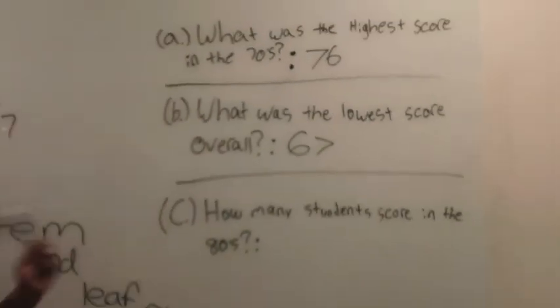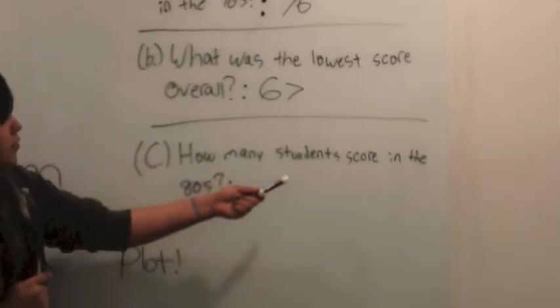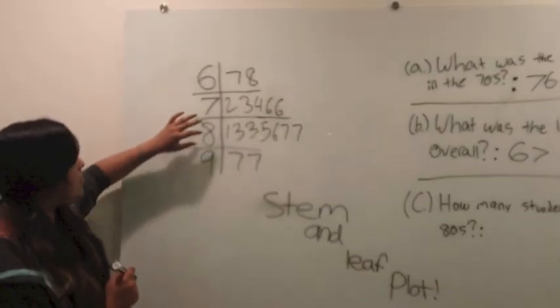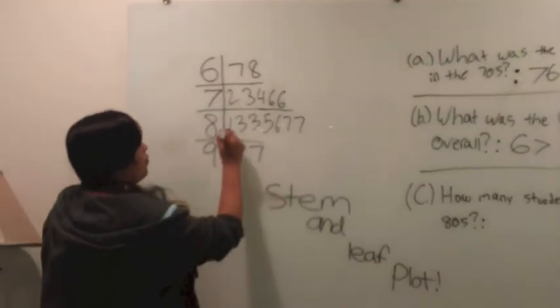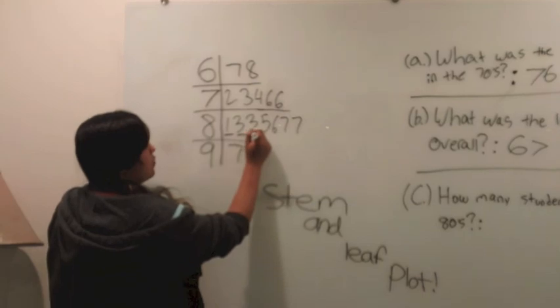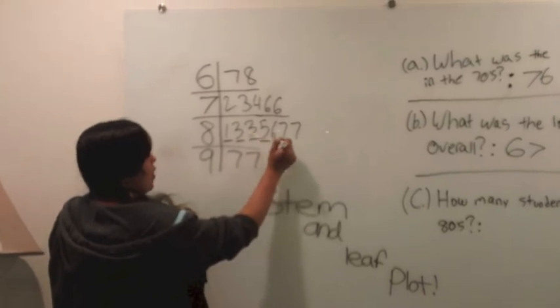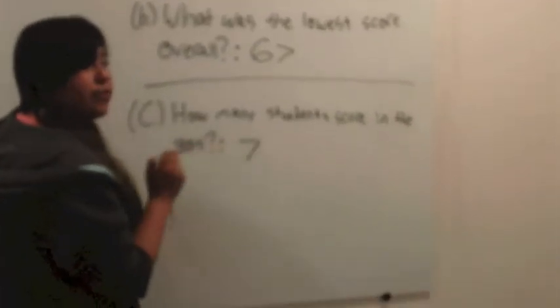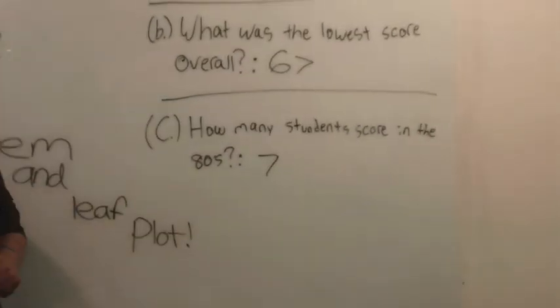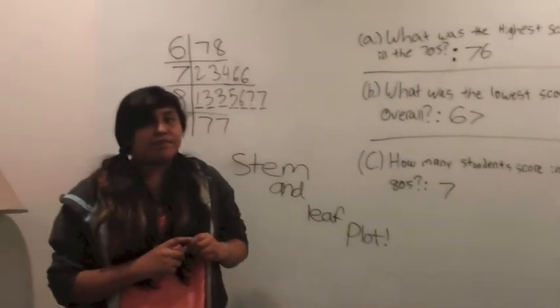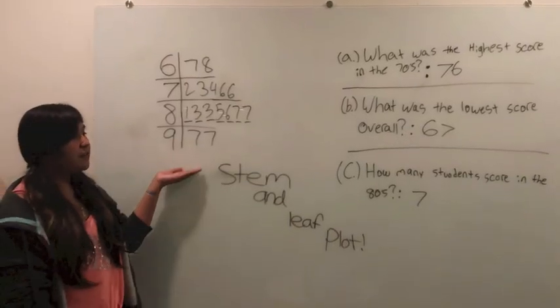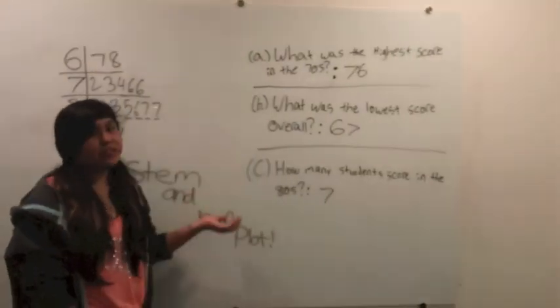And then now for the third one, how many students scored in the 80s? So we'd have to go back into the 80s which is right here. If we go how many students, we'd just have to count: one, two, three, four, five, six, seven. So seven students scored in the 80s. And this is how you use a stem and leaf plot with the questions.